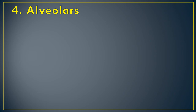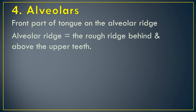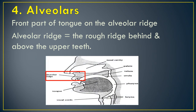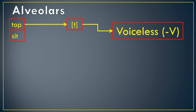The fourth place of articulation is alveolars. These are sounds formed with the front part of the tongue on the alveolar ridge. The alveolar ridge is the rough ridge behind and above the upper teeth. Let's try to produce the sounds. We have /t/ like in 'top,' which is voiceless; and /s/ like in 'sit,' which is also voiceless.